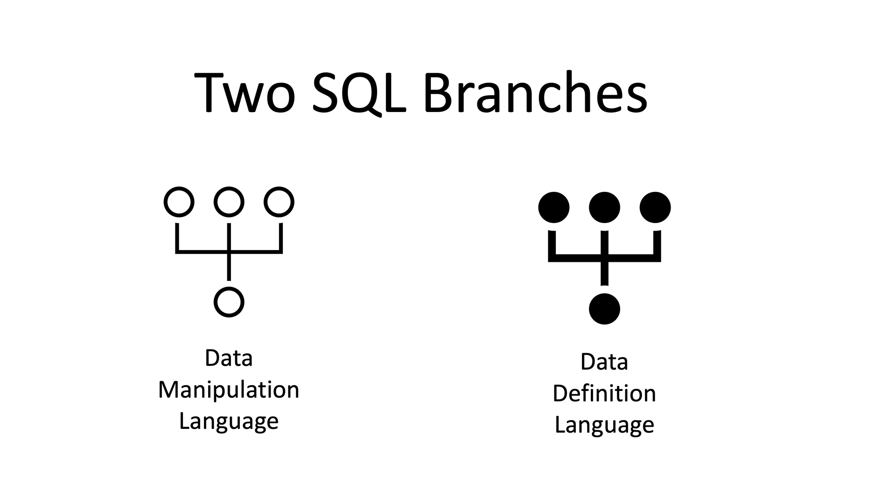For example, SQL Server's flavor of SQL is called Transact-SQL. Oracle's flavor is called PL/SQL. Snowflake's flavor is called SnowSQL. The SQL language is broken into two major branches.